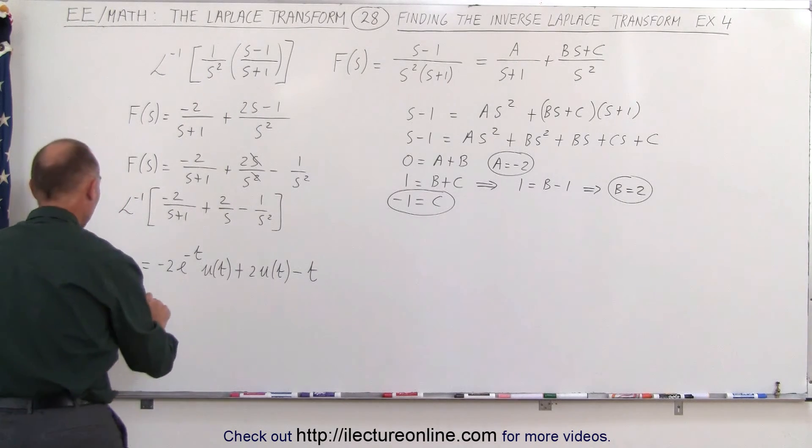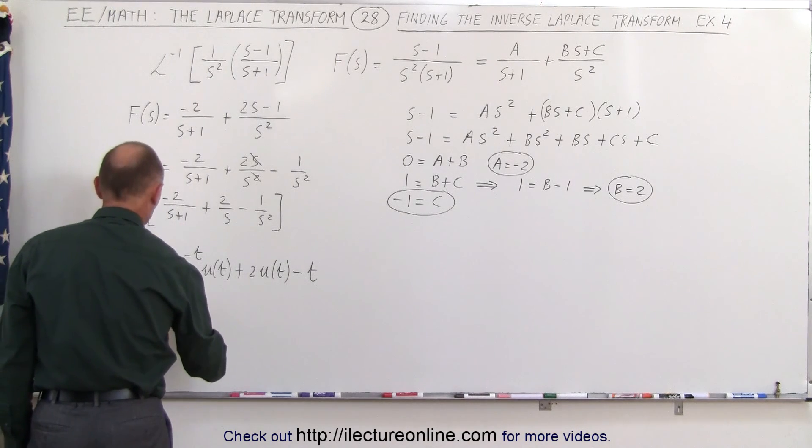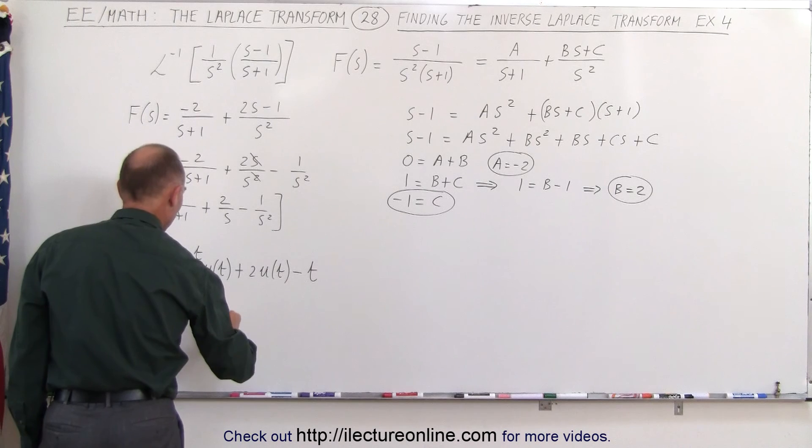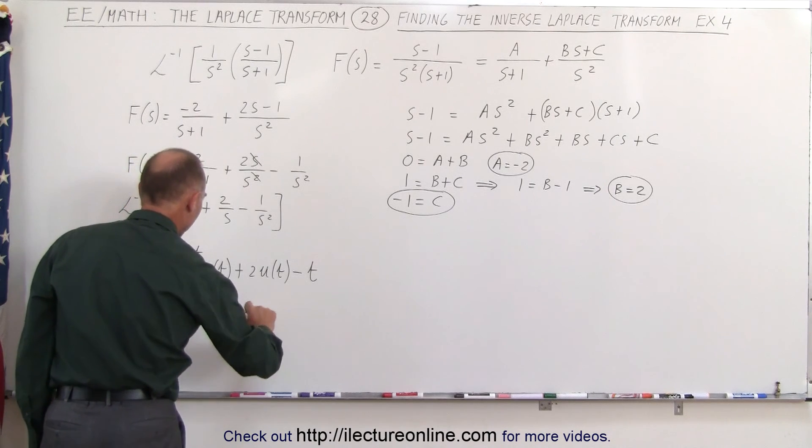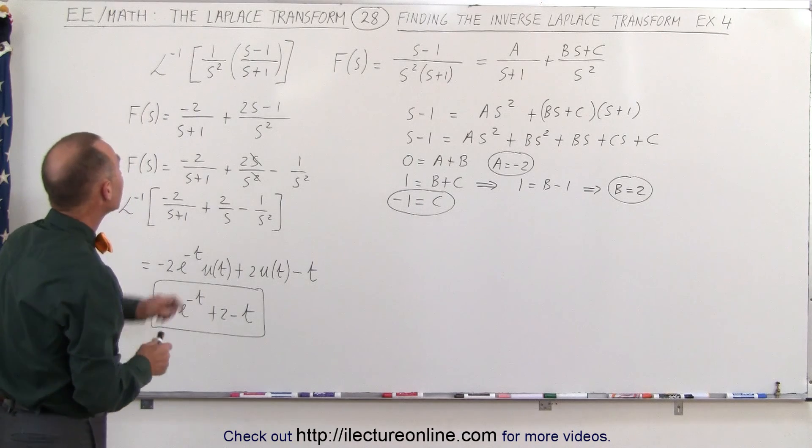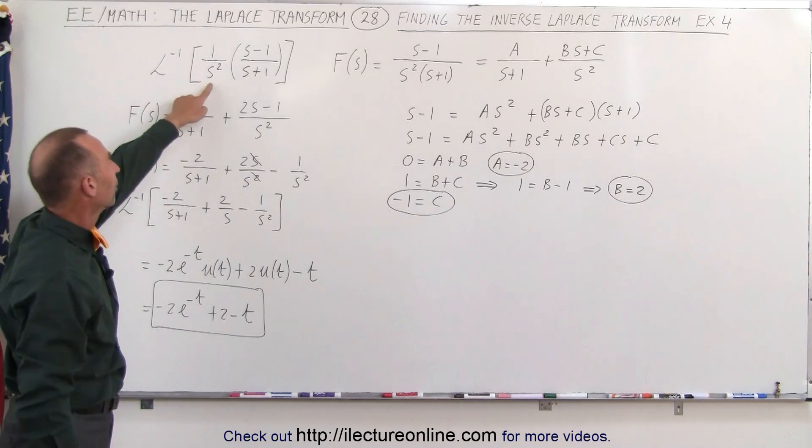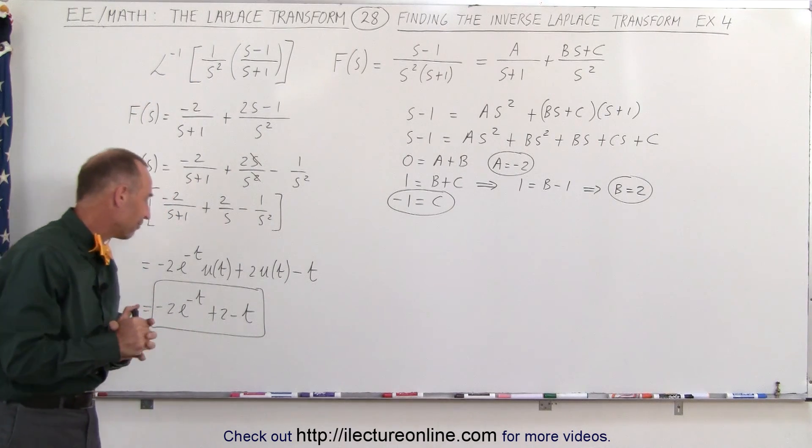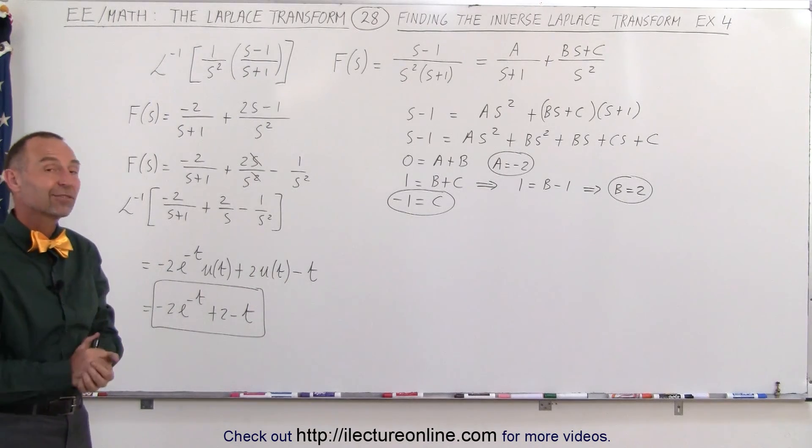And depending upon what problem you're working, you may not want to write u of t because you know that's equal to one. So you could simplify it and write minus two e to the minus t plus two minus t as the final answer when you're looking for the inverse Laplace transform of this original function in the frequency domain, and that's how it's done.